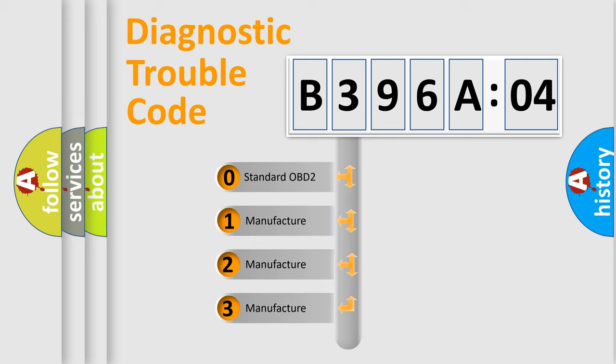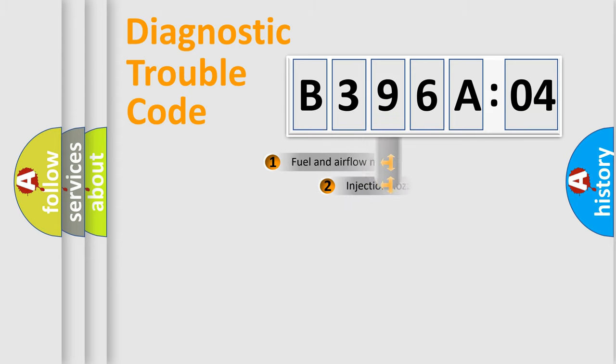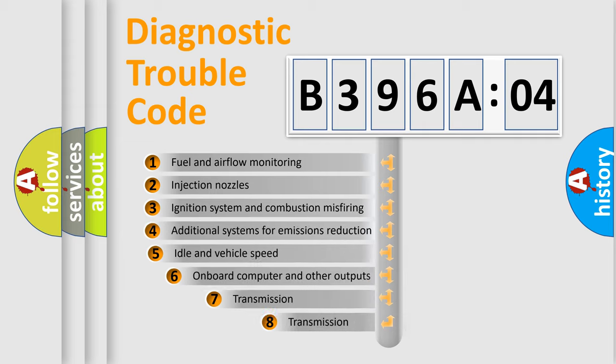If the second character is expressed as zero, it is a standardized error. In the case of numbers 1, 2, 3, it is a more prestigious expression of the car-specific error.